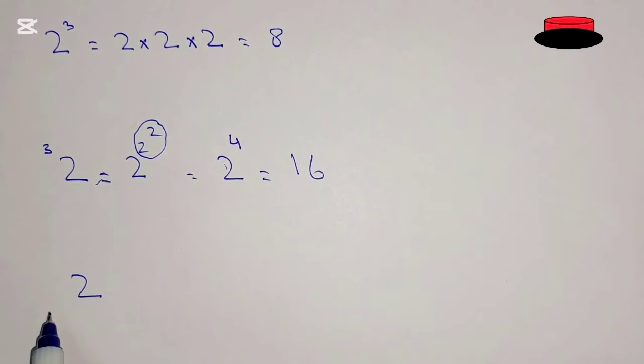Now we go to pentation. We will write 3 on the left bottom of the 2. Pentation is actually repeated tetration.